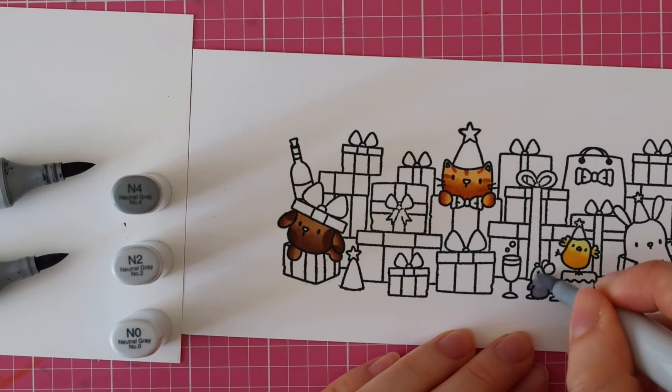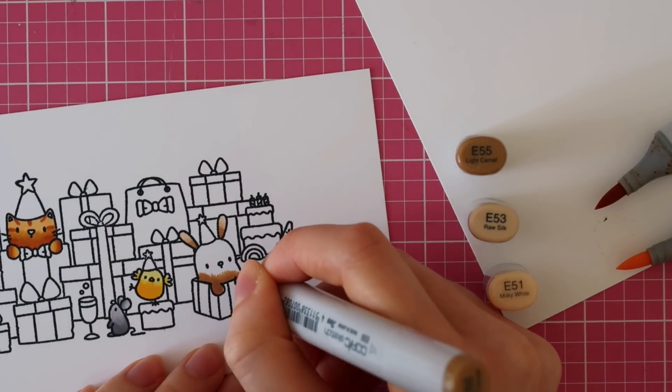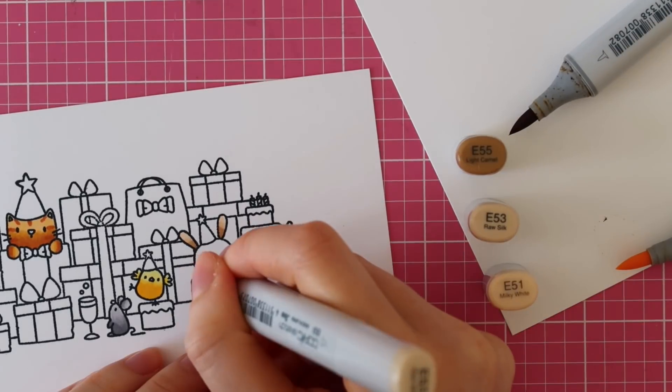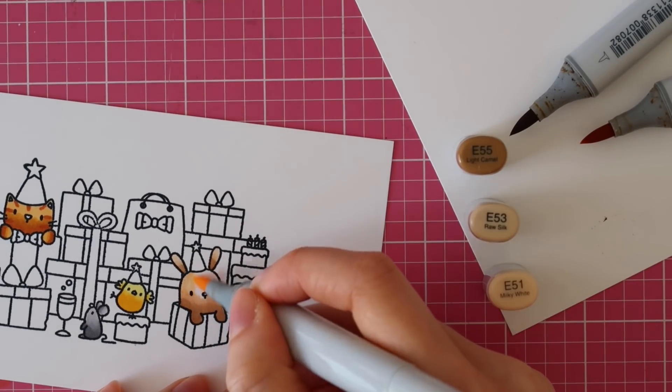To color this adorable little mouse, I'm using N4, N2 and N1. And then for this bunny, I'm using E55, E53 and E51.